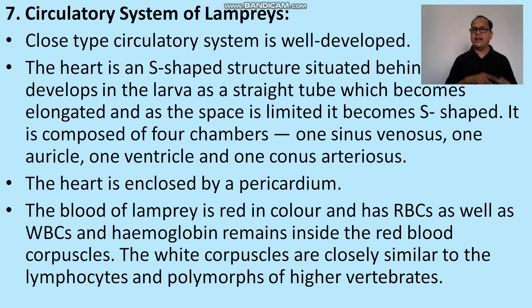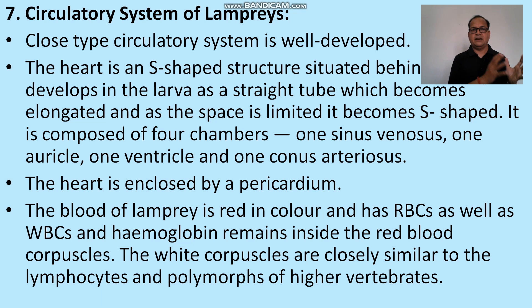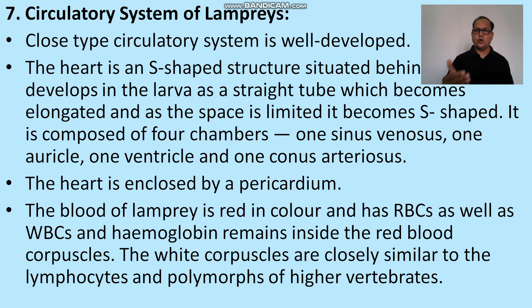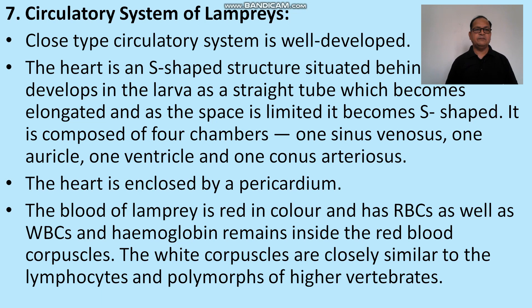Circulatory system: a closed-type circulatory system is well developed. The heart is S-shaped and two-chambered — one auricle and one ventricle — with an additional chamber, the sinus venosus. Impure blood is collected by the veins and drains into the sinus venosus, then to the auricle, to the ventricle, and to the gills via the ventral aorta. The heart is enclosed by the pericardium. Blood is red in color; both RBCs and WBCs are present, with hemoglobin inside the RBCs. White blood cells are similar to lymphocytes or polymorphs found in higher vertebrates.